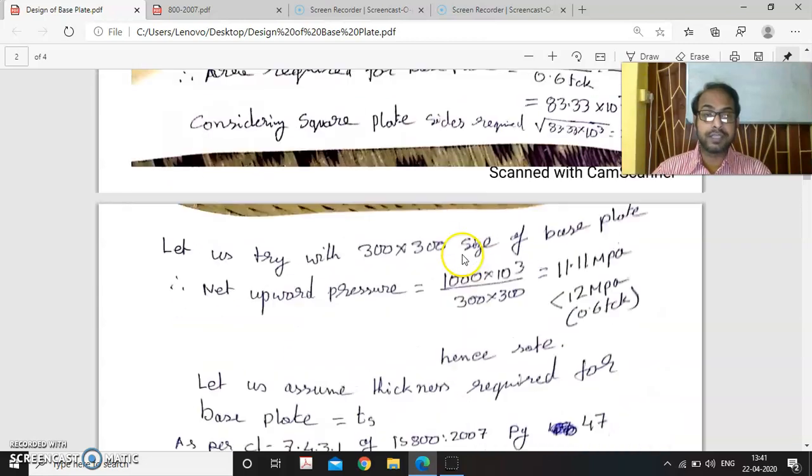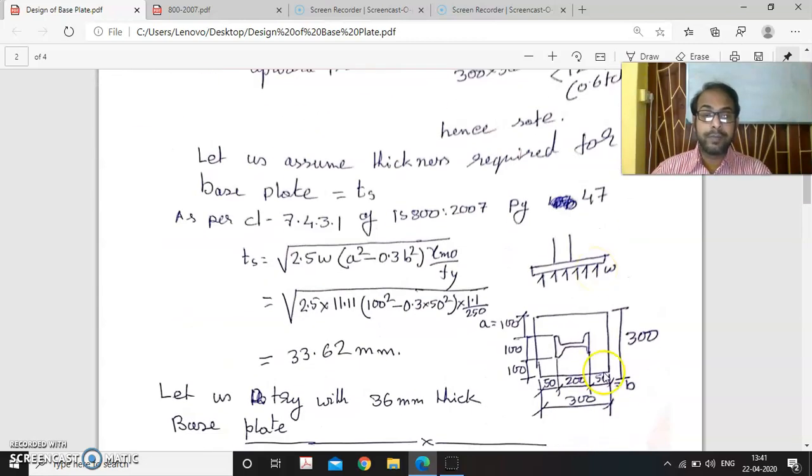W is known to us, it is 11.11. Now B and A: we have subtracted this portion for ISMB 200. The overall depth is 200, so we have subtracted it from 300 and divided by 2, giving us 50 millimeter. And in this side, the flange width is 100, so it is given as 100 millimeter. So the A dimension is 100 millimeter, and the B is 50 millimeter.